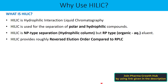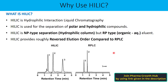HILIC provides a roughly reversed elution order compared to RPLC. This is quite obvious because reverse phase uses a hydrophobic stationary phase whereas HILIC uses a hydrophilic stationary phase. As the property of the stationary phase is completely reversed, the elution order for compounds will also be completely reversed. For example, if the elution order in HILIC is compound 1, 2, 3, you can expect the complete reversed order in RPLC: compound 3, followed by 2, followed by 1.